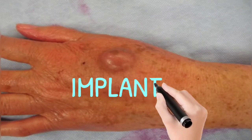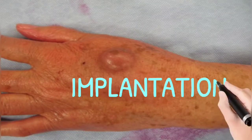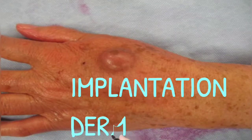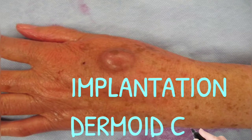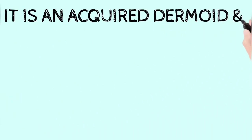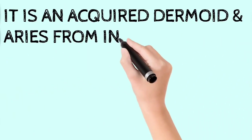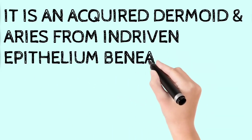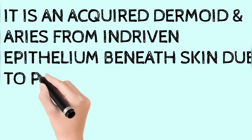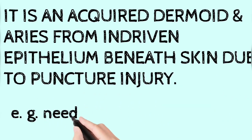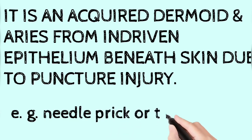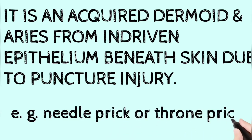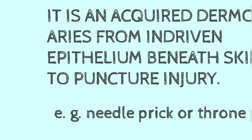Hello friends, today's topic is Implantation Dermoid Cyst. It is an acquired dermoid and arises from the end-driven epithelium beneath the skin due to punctual injury, for example like a needle prick or a thorn pick.